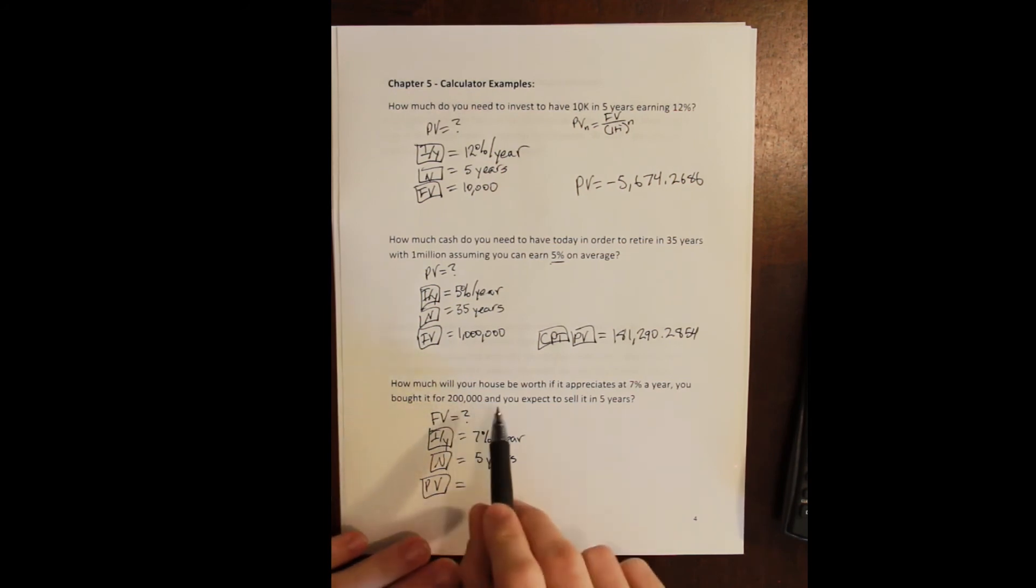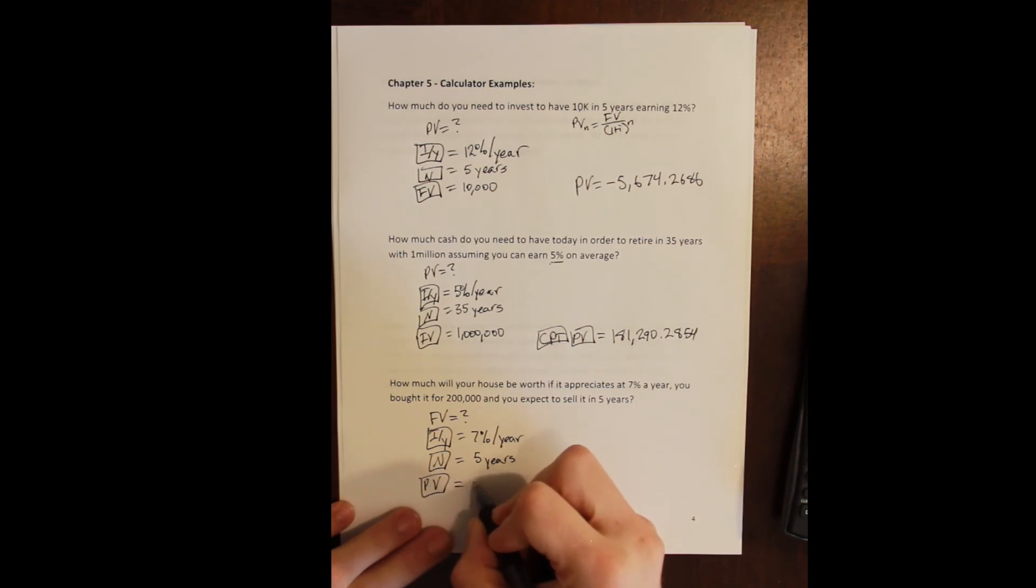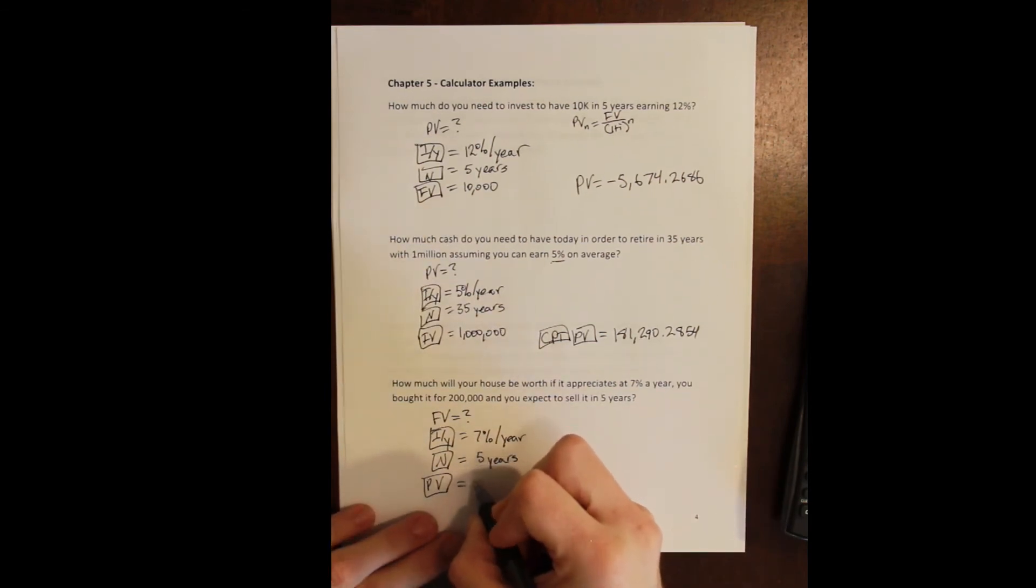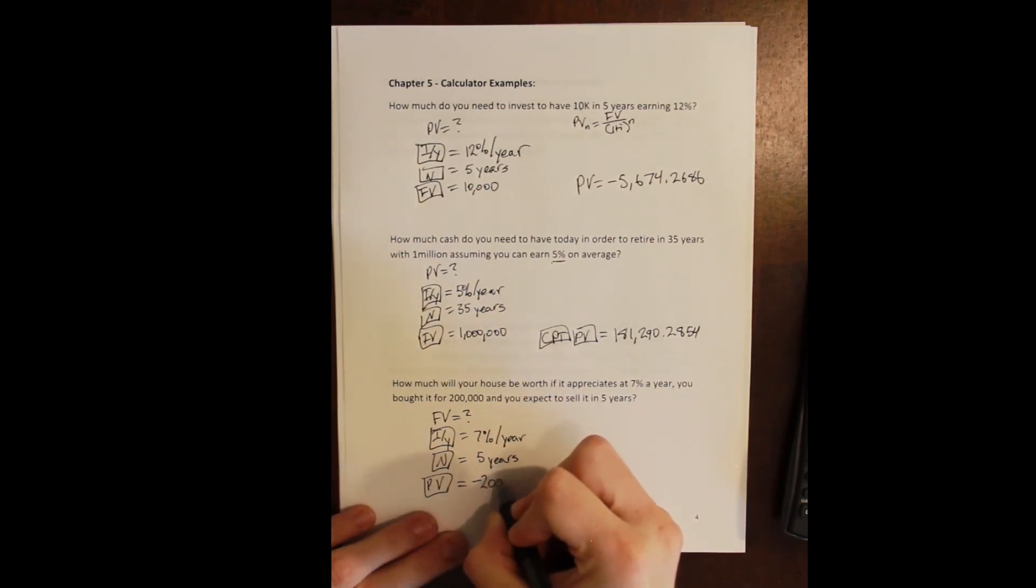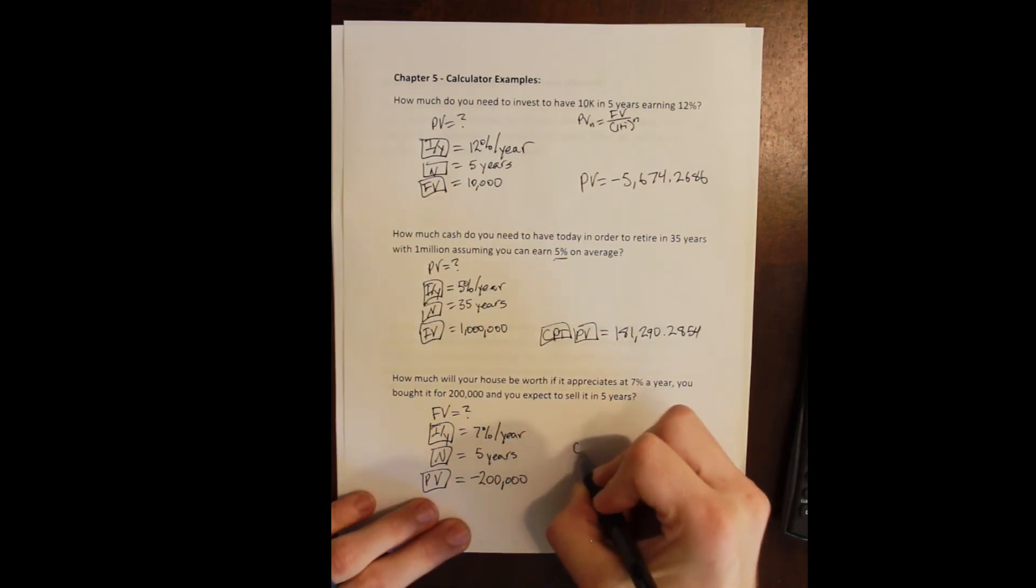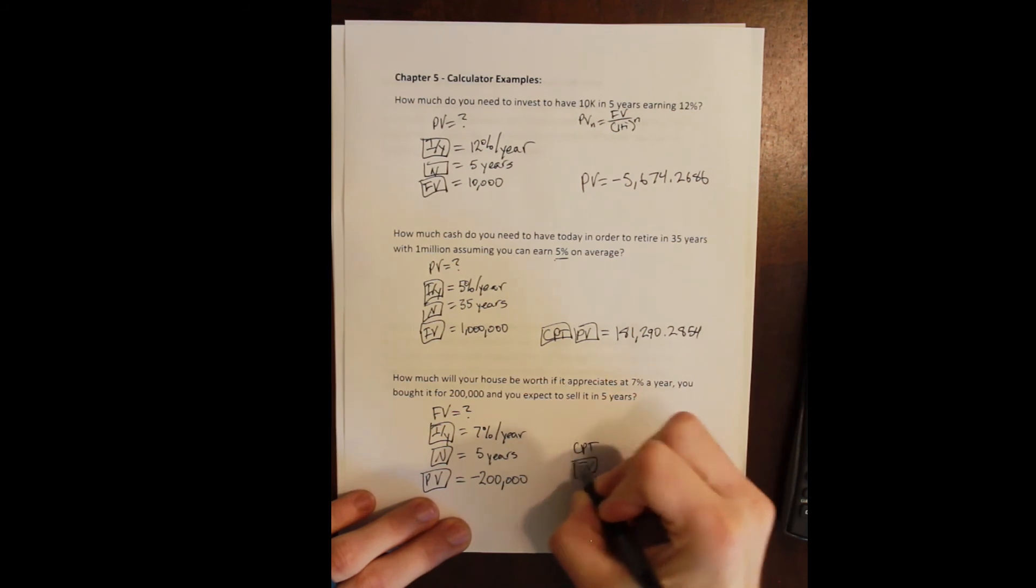Because we bought it, it is a cash outflow - this is money leaving our person, our account. So it is a negative $200,000 present value. We are spending $200,000 on the house. When we sell it in five years, we will be receiving that money, and that is the cash inflow which is our future value.